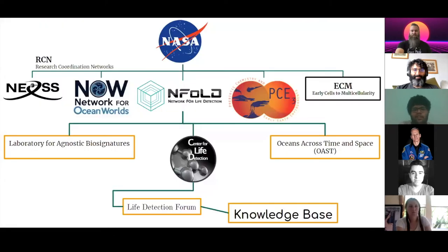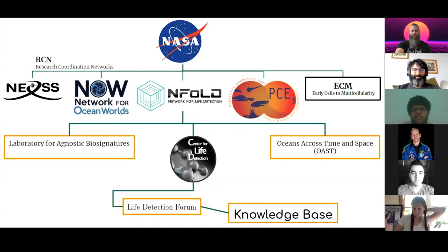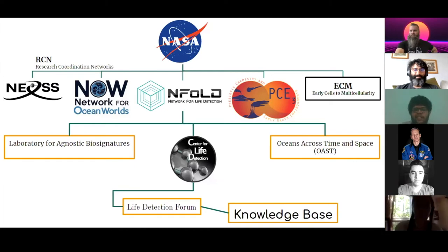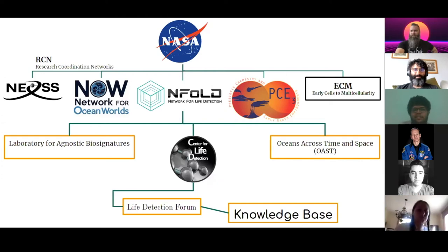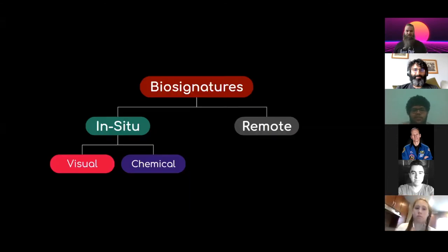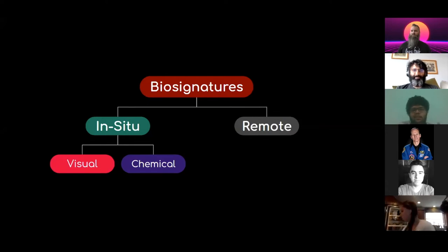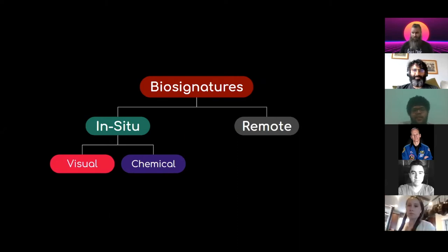A lot of effort is going on by NASA, and one such effort is the life detection forums knowledge base — a community-based repository of all current knowledge about life detection. It's still under development, under the Network for Life Detection, which is a NASA research coordination network. Biosignatures can be broadly divided into in-situ and remote, based on the detection method. In-situ can be further divided into visual and chemical biosignatures, which I'll be focusing on today.